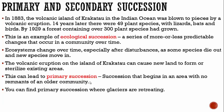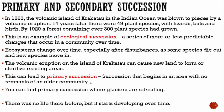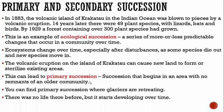You can find primary succession where glaciers are retreating — there was no life there. When glaciers are melting and moving back, new land is exposed and new communities and ecosystems can start to grow there. There was no life there before, but it starts developing over time. That's an example of primary succession.